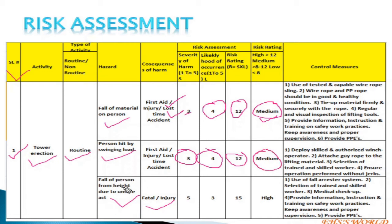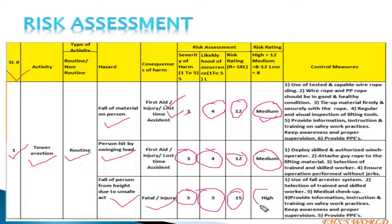For fall of person from height, the severity is high — it can lead to fatality or multiple injury, so severity is 5. The likelihood or probability is 3, because once a year we hear in the construction company that a person falls from height. So 5 multiplied by 3 equals 15 — the risk rating is high.